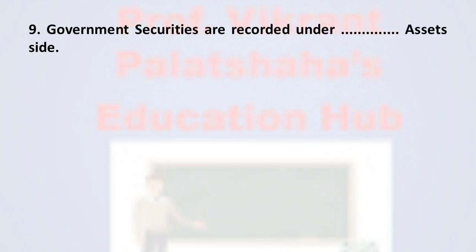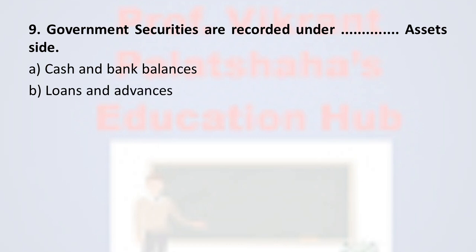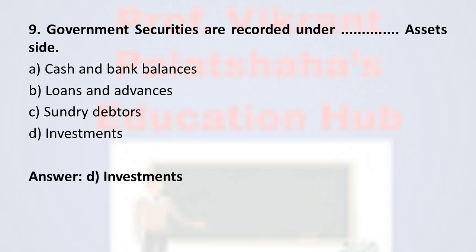Question number 9: Government securities are recorded under ___ on the assets side. Option A: cash and bank balances. Option B: loans and advances. Option C: sundry debtors. Option D: investments. The correct option is option D, investments. Government securities are shown under the asset side of the cooperative society under the head investments. Therefore, the correct option is option D.